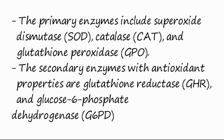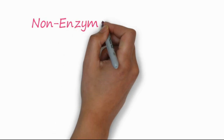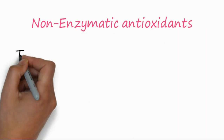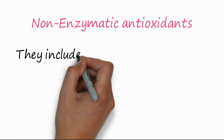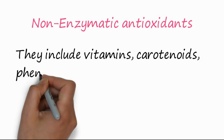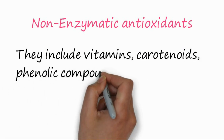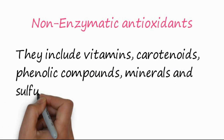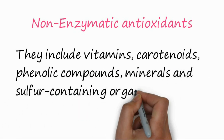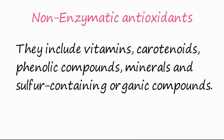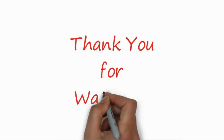This classification is based upon direct versus indirect antioxidant prevention. The non-enzymatic antioxidants include the rest of the compounds in this class, which include vitamins, carotenoids, phenolic compounds, minerals, sulfur-containing organic compounds, etc. This is a broad and large class of antioxidants.